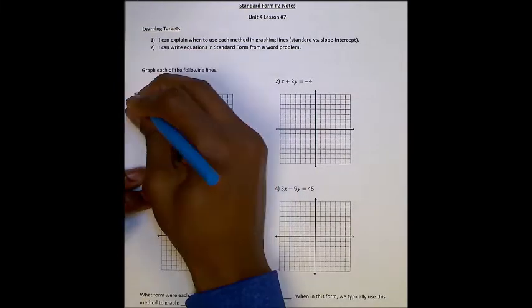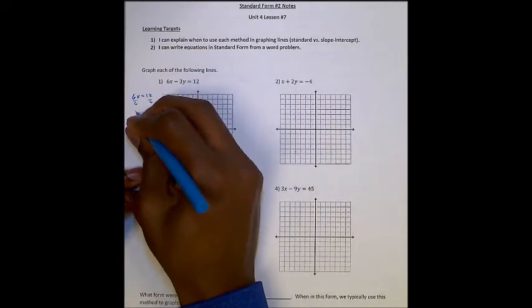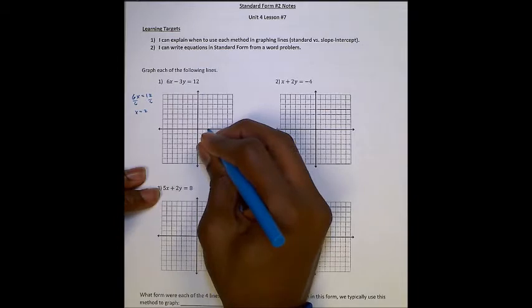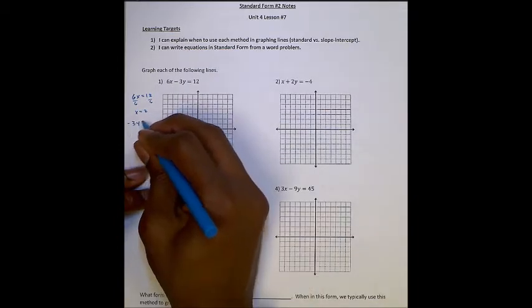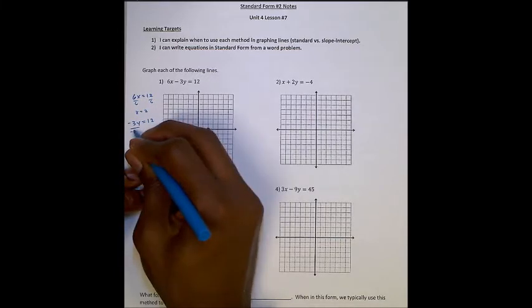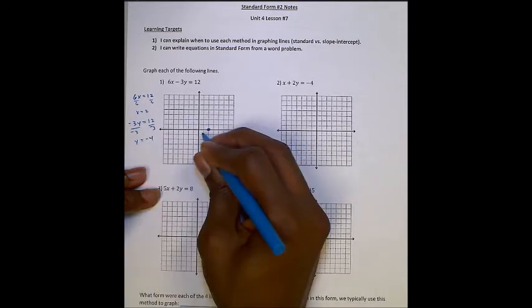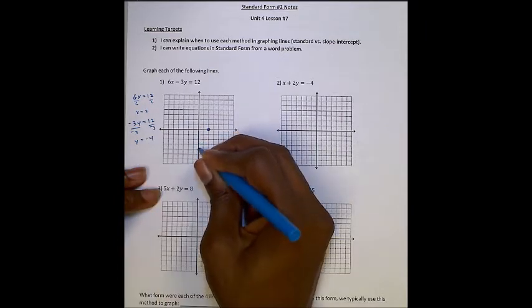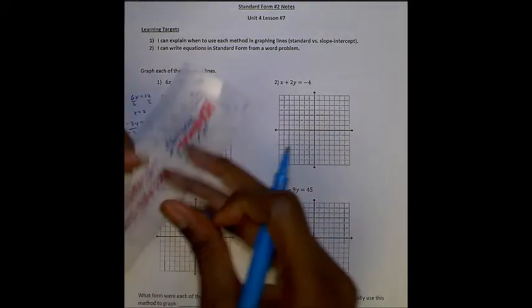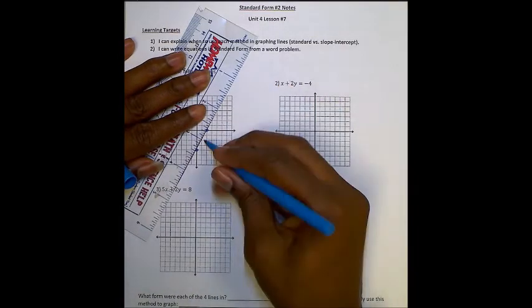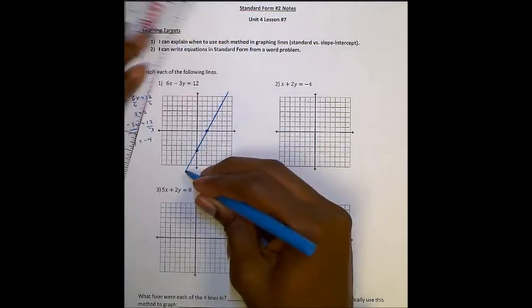x-intercept here, 6x equals 12, divided by 6, x equals 2. My x-intercept is here at 2, 0. I'll do the same thing with the y. Negative 3y equals 12, divided by negative 3, y equals negative 4. So down here, 1, 2, 3, 4. And then I'm going to draw a straight line through. That's my first line.